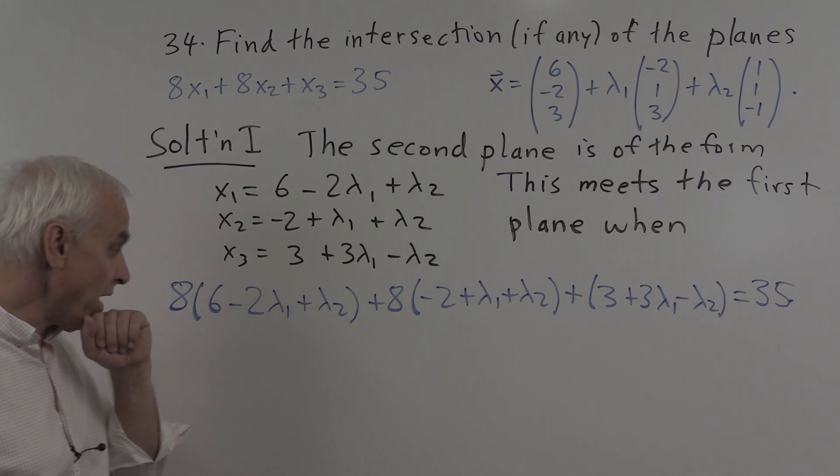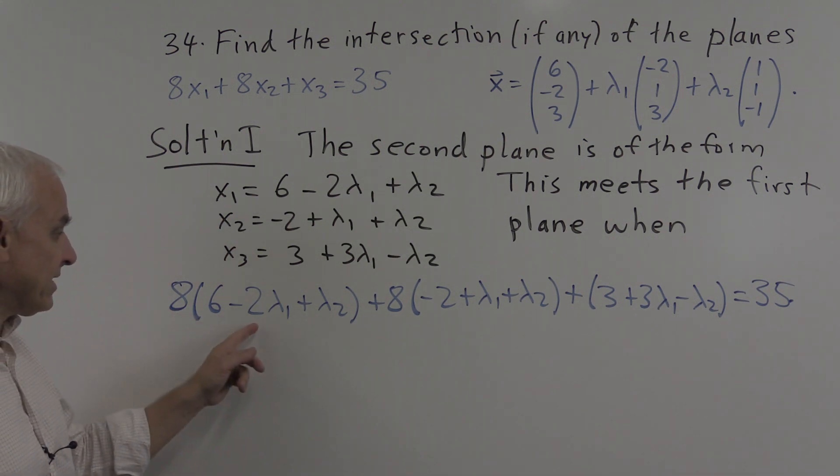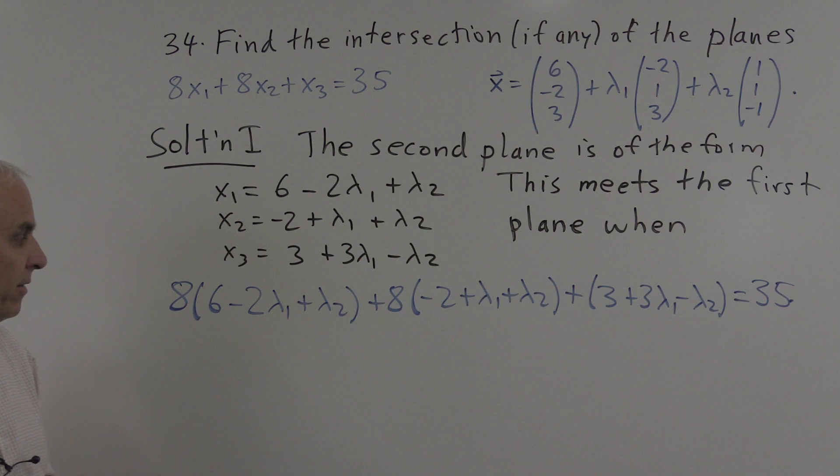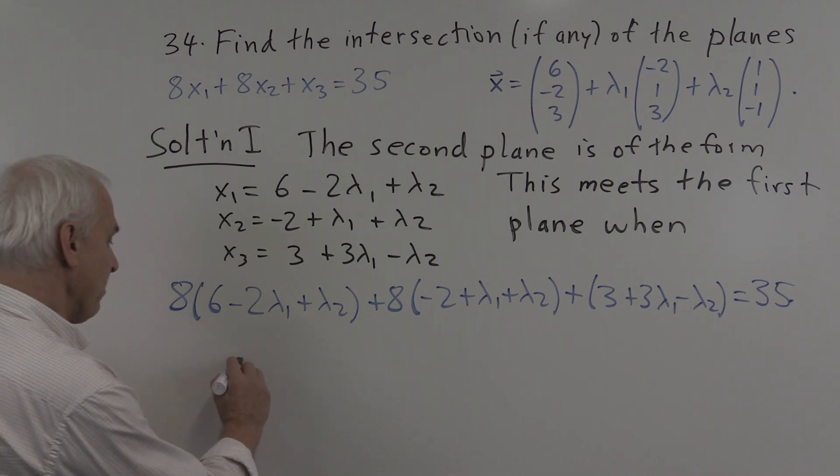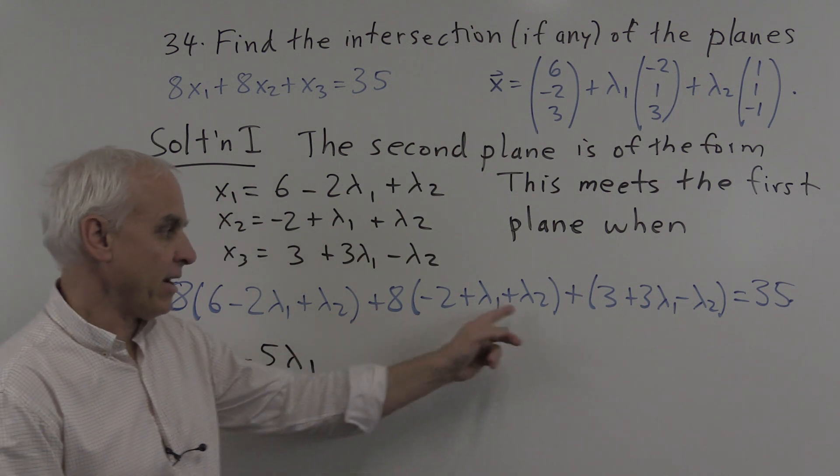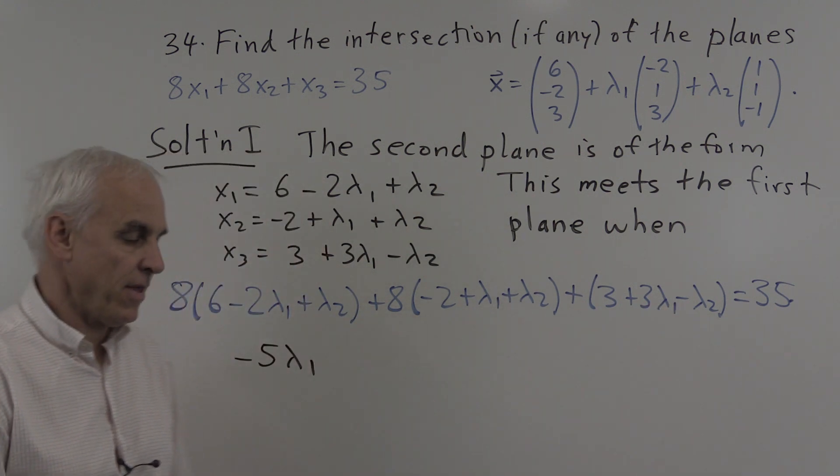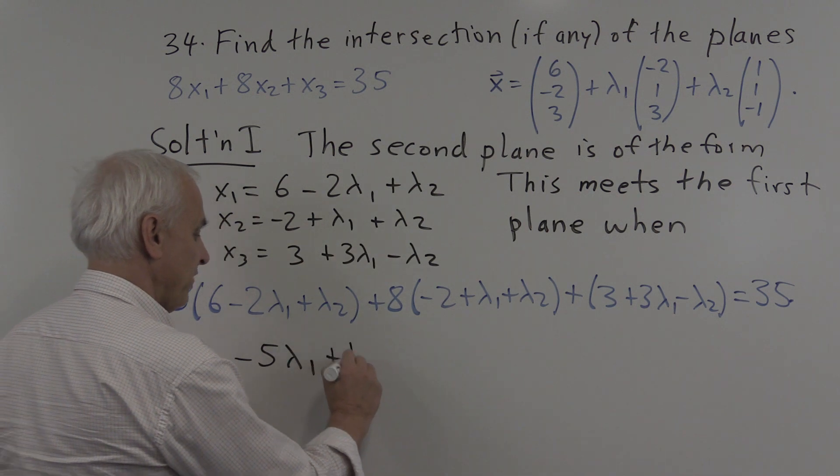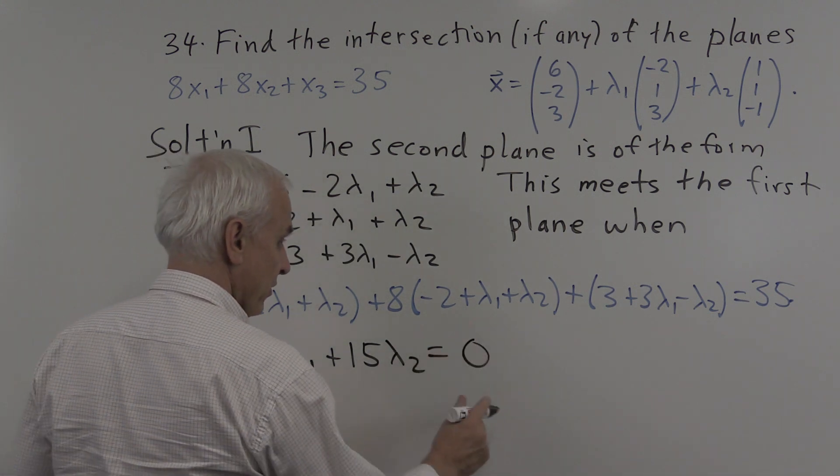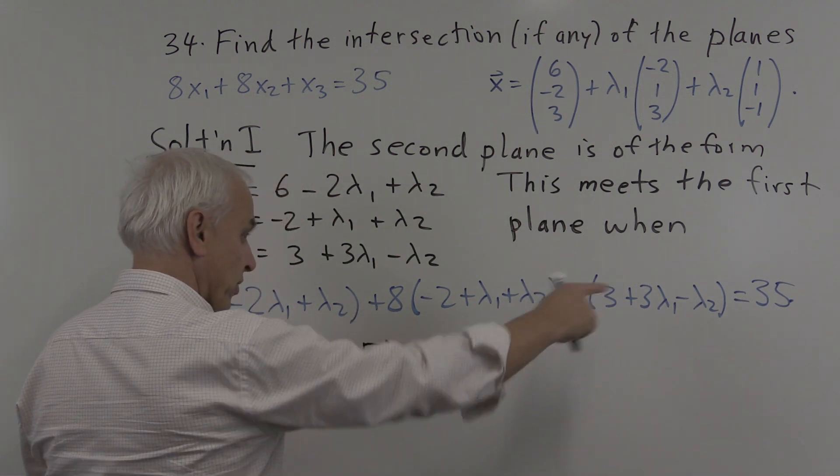Alright, what about the lambda 1 terms? There's minus 16 lambda 1 here plus 8 lambda 1 here plus 3 lambda 1 here. So minus 16 plus 8 is minus 8 plus another 3 is minus 5. So we get minus 5 lambda 1. And how many lambda 2's are there? 8 lambda 2, another 8 lambda 2, minus 1 lambda 2. That's a total of plus 15 lambda 2. And that equals, well, we've decided that there's going to be a 35 on this side which will cancel with the 35 on the other side. So just equaling 0.